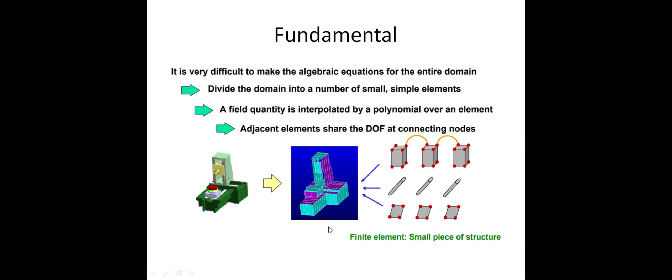Similarly, Y direction: six thousand equations, Z direction also six thousand equations. All these equations are very, very complicated theoretically. So instead, we divide the domain into a number of small simple elements. The field quantity is interpolated by a polynomial over the element — whether linear or non-linear polynomial equations depend upon the geometry.